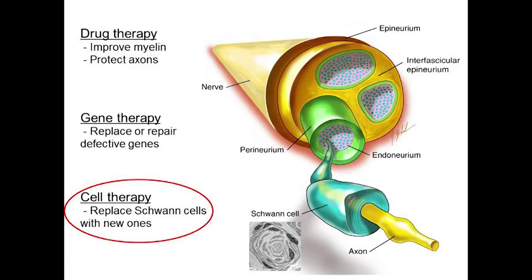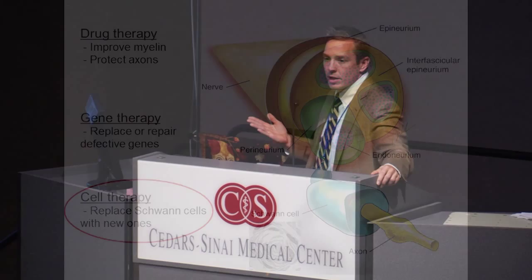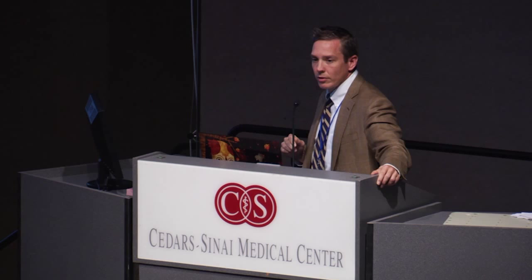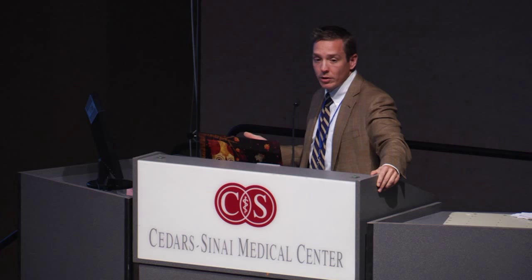We have several strategies to develop treatments for this disease. Drug therapies have two options: they can either improve the function of the myelin so the problem doesn't happen, or they can protect the axons — not fix the myelin problem, but keep those axons intact. We know those protective factors must exist, because some CMT1 patients have a very severe early-onset form while others aren't diagnosed until their seventies — with the same gene defect. So there are other genes or environmental factors that protect those axons, and we're working hard to figure out what those are.